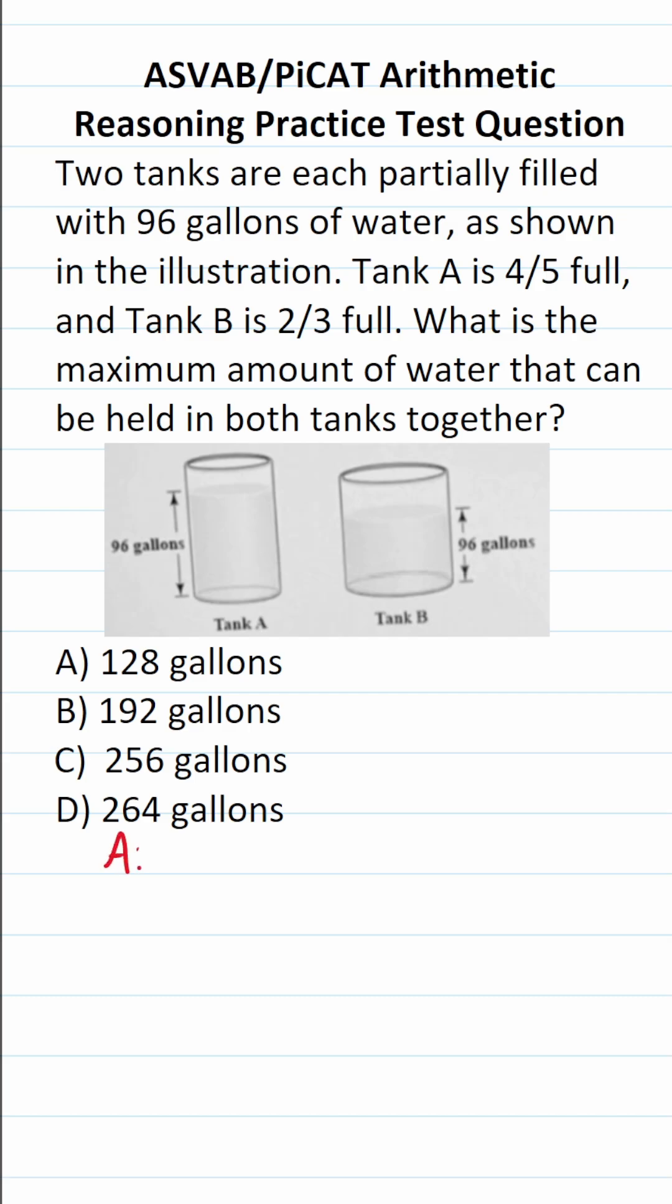Alright, so let's look at tank A and tank B separately. We know that both of them have 96 gallons of water in them. Tank A is four-fifths full, so 96 gallons is going to be equal to four-fifths of its maximum capacity, which I'm going to call X.